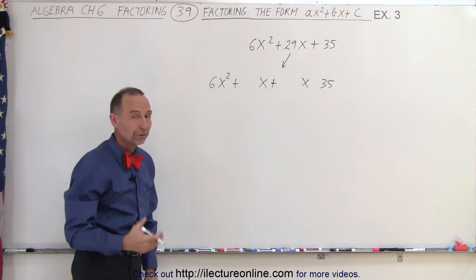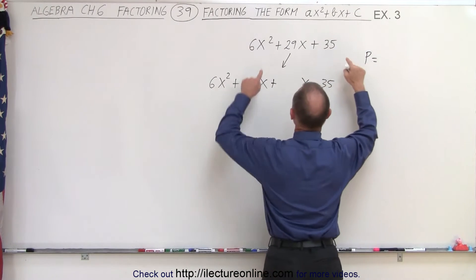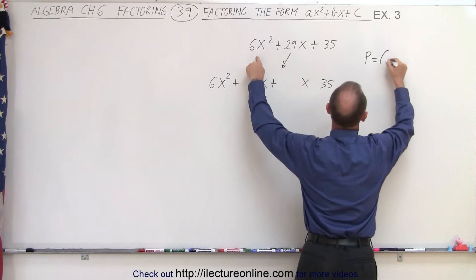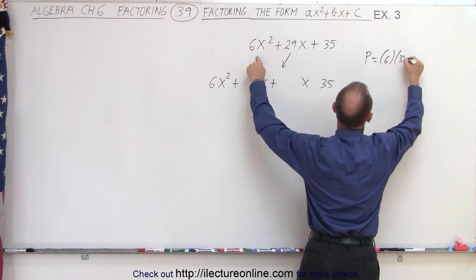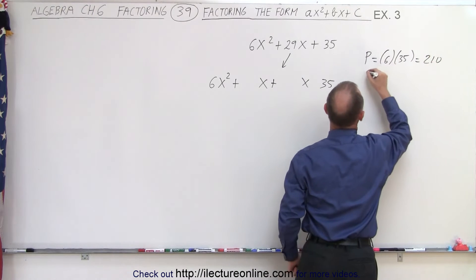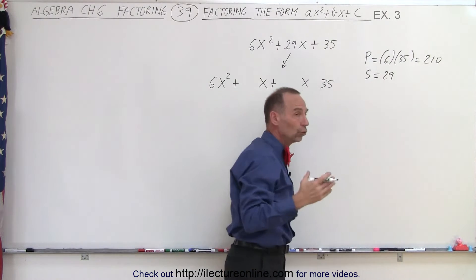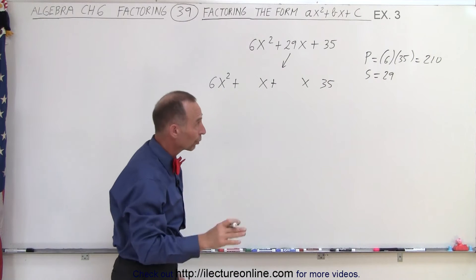What are those two numbers? To find them, we know that the product must equal 6 times 35, which is 210, and the sum must equal 29. They're both going to be positive.